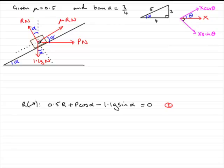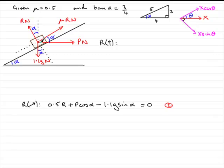The reason I want to resolve upwards is because P acts perpendicular to this direction, so it won't enter the equation. Last time we ended up with an equation with R and P in it. But in this particular way of resolving, for this example, because P is perpendicular to this direction, it won't enter the equation. So I can avoid simultaneous equations and the solution will be a lot quicker.